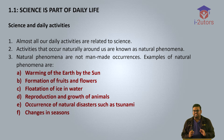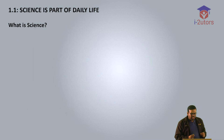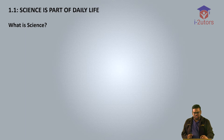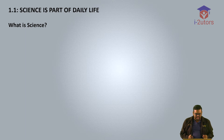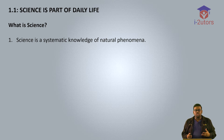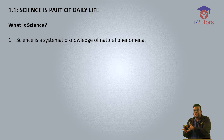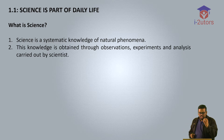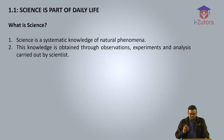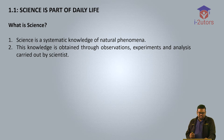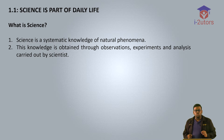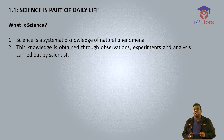Now let's look at the second part — the most common question many students ask me: what is science? Science is a systematic knowledge of natural phenomena. What the scientist does is investigate how natural phenomena happen. This knowledge is obtained through observations, experiments, and analysis carried out by scientists.